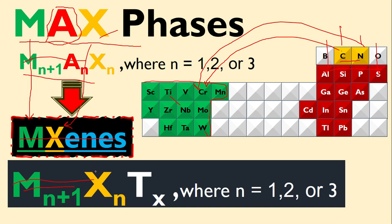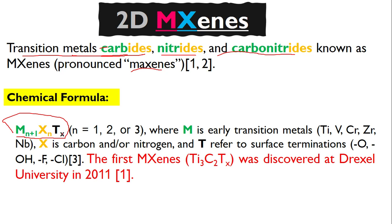This M and X are the same, but in MAX we remove A. But here, this T means functional groups. When we remove this A during the etching process or some other process, some functional groups attach to the MX space. This M is basically a transition metal. This X is carbon or nitrogen, and this T is basically functional groups.